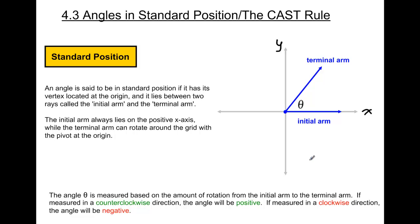So we can draw an angle on the xy plane. We say that an angle is in its standard position if it's located between two different rays. So these lines here that have arrows at one end and a dot at the other end, they're called rays. One of these rays is called the initial arm, and one of these rays is called the terminal arm. Essentially, the initial arm always stays on the positive side of the x-axis.